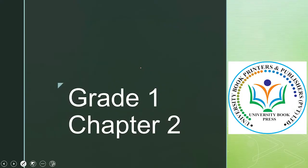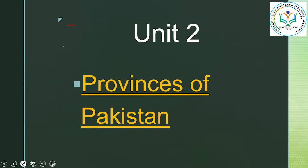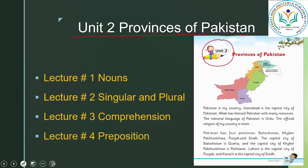Bismillah Rahman Rahim. Grade 1, Chapter 2. The name of the unit is Provinces of Pakistan, Unit number 2, on page number 9 of the English textbook. Today is lecture number 2. We have done lecture number 1, so today we are going to practice singular and plural nouns, which is the grammar section in the book. Lecture 3 will be comprehension and lecture 4 will be prepositions. So let's move on to today's lesson.